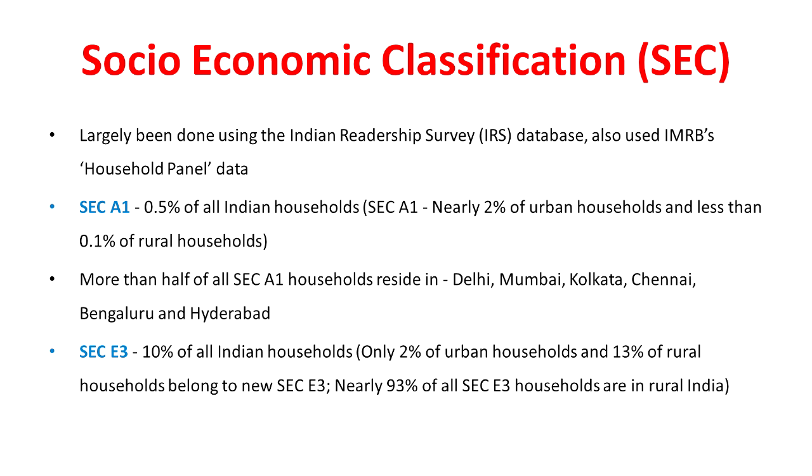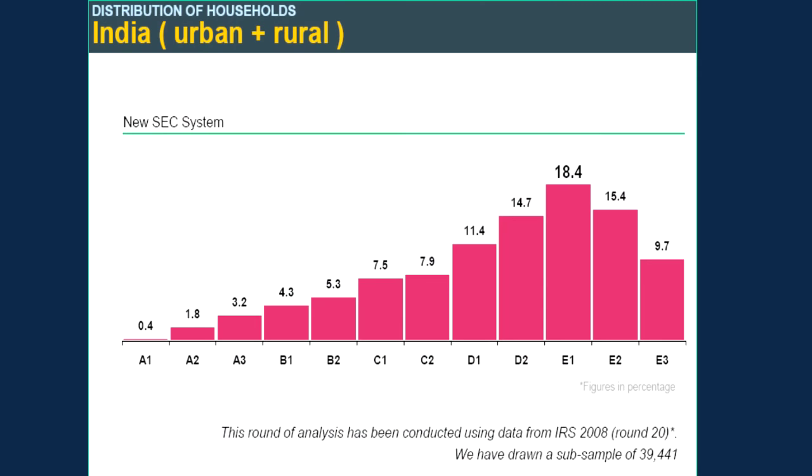The topmost SEC class A1 comprises only half a percent of all Indian households. Nearly 2 percent of Indian households and less than 0.1 percent of rural households belong to the new SEC A1. More than half of all SEC A1 households reside in the top six Indian cities: Delhi, Mumbai, Kolkata, Chennai, Bengaluru and Hyderabad. At the other end of the spectrum, the bottommost SEC class E3 comprises 10 percent of all Indian households — this is what CK Prahlad described as the bottom of the pyramid. Only 2 percent of urban households and 13 percent of rural households belong to SEC E3, and nearly 93 percent of all SEC E3 households are in rural India.